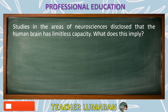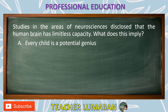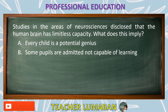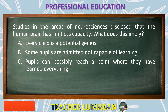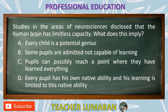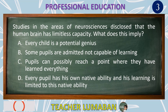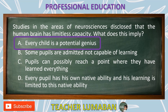Studies in the areas of neurosciences disclosed that the human brain has limitless capacity. What does this imply? Letter A: Every child is a potential genius. Letter B: Some pupils are admitted not capable of learning. Letter C: Pupils can possibly reach a point where they have learned everything. Letter D: Every pupil has his own native ability and his learning is limited to this native ability. The correct answer is Letter A. This implies that every child is a potential genius.